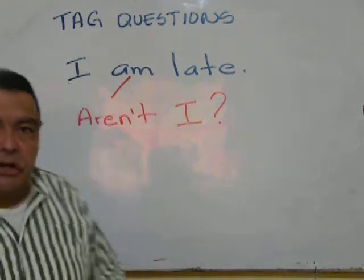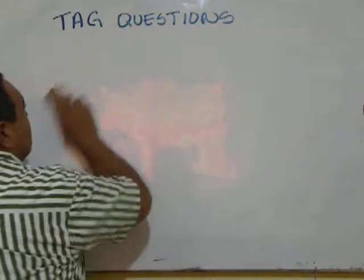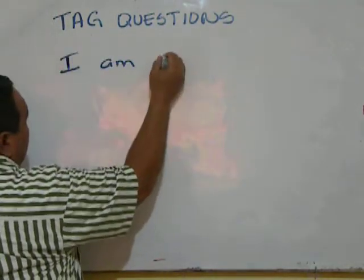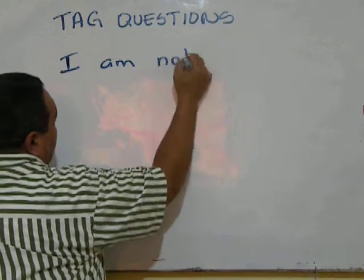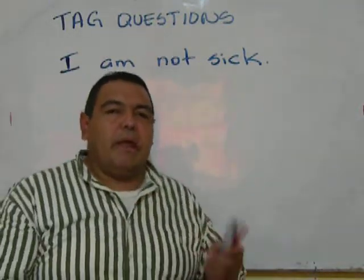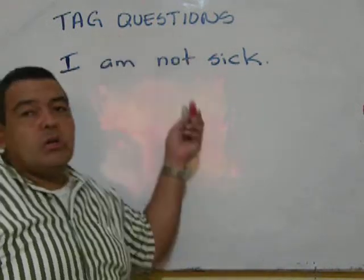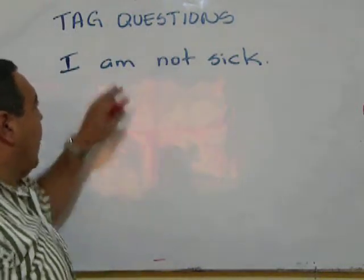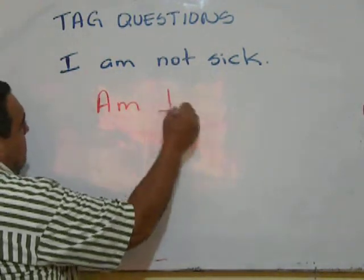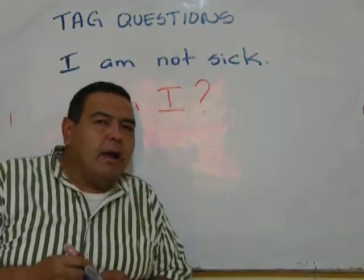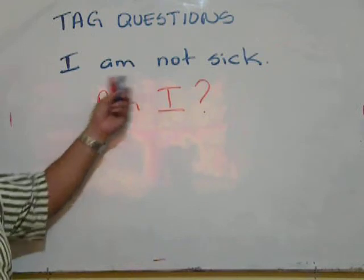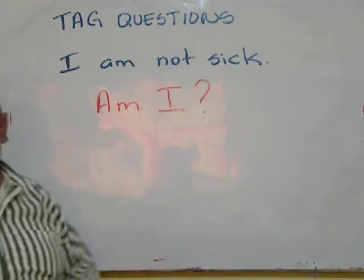That was for affirmative expressions. Now let's go with negative. For example: 'I am not sick.' Since I'm saying something negative, the tag question must go in a positive way. In this case, yes, I'm going to go with the 'be' form. 'I am not sick, am I?' See the difference? So only for the 'I am' affirmative expressions we use 'aren't'. But when I'm saying a negative thing, I go with the tag question as we usually do.